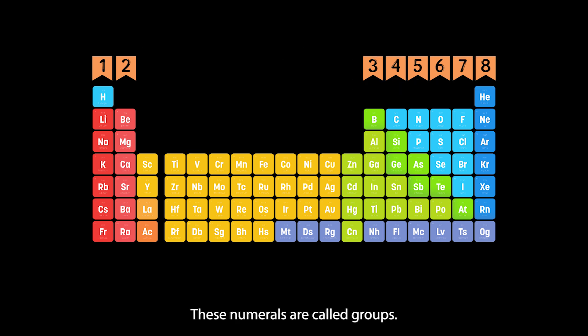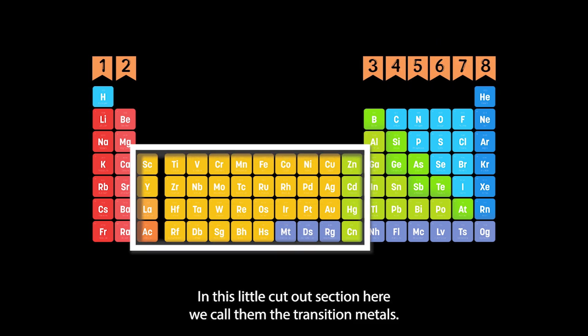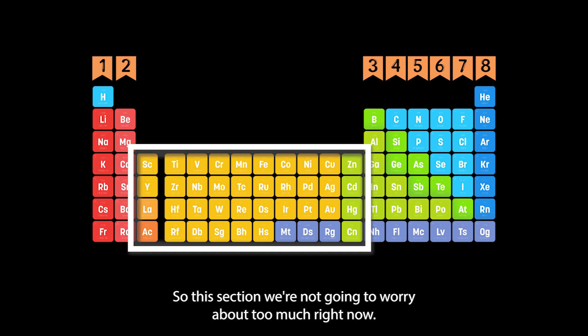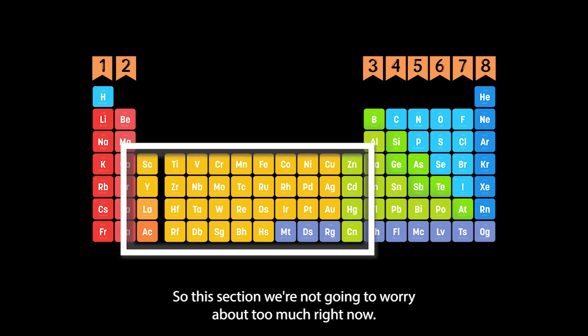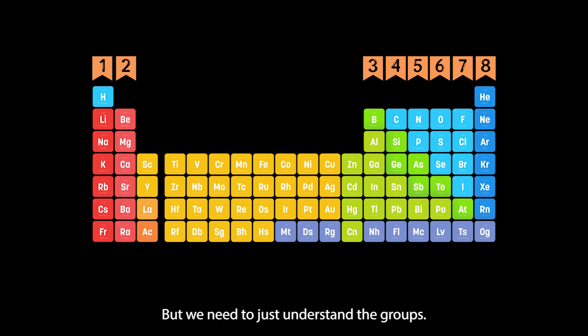These numerals are called groups. Obviously this is group 1, group 2, group 3, group 4, etc. In this little cutout section here we call them the transition metals, so this section we're not going to worry about too much right now, but we need to just understand the groups.